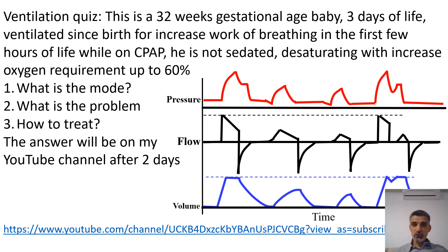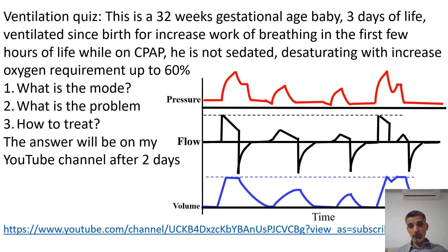The most important point in understanding the mode is looking at the type of breaths. You can see here we have two types of breath: mandatory, which is generated by the machine, and two spontaneous breaths. If you look at the pressure graph, you can see that one breath is generated by the machine and one is generated by the patient, and therefore there is asynchrony. So we know there is mandatory and there is spontaneous.